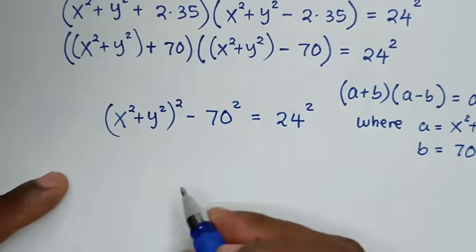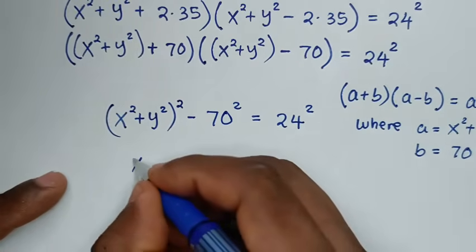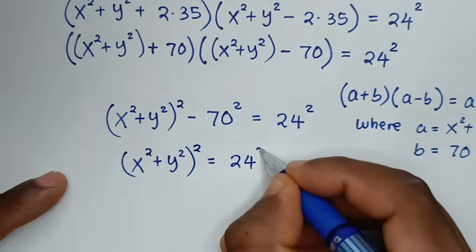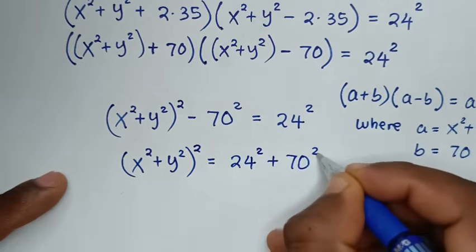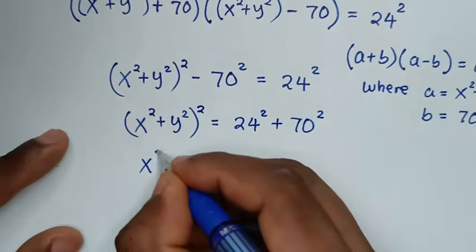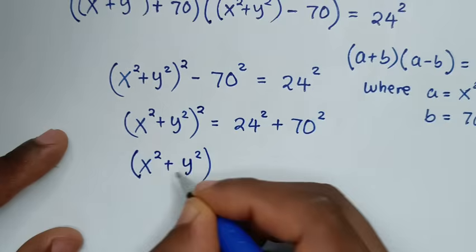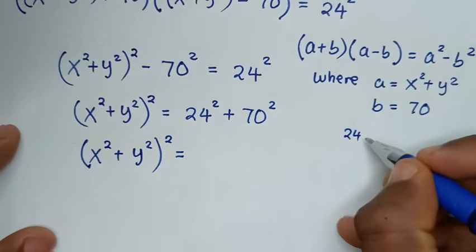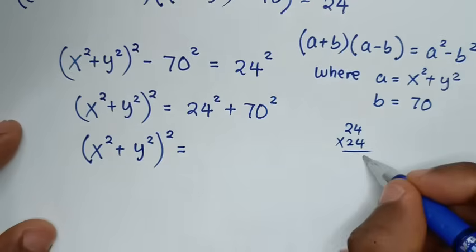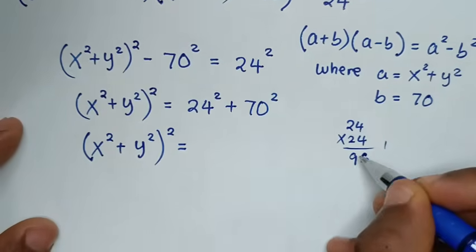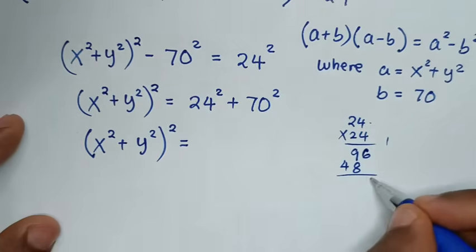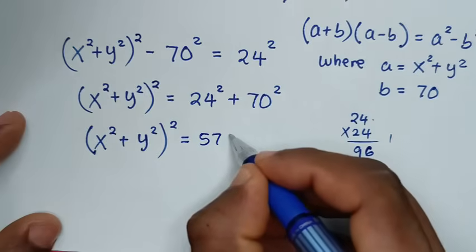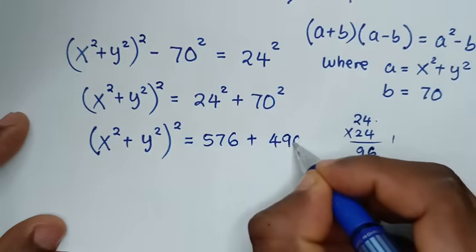In the next step, we move the 70² to the other side: (x² + y²)² = 24² + 70². Computing: 24² = 576, and 70² = 4900. So (x² + y²)² = 576 + 4900 = 5476.